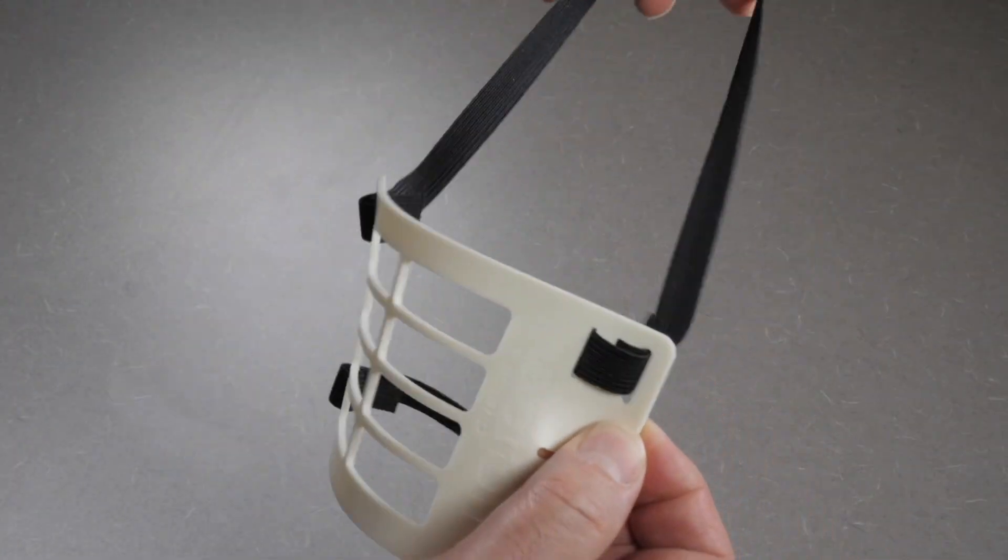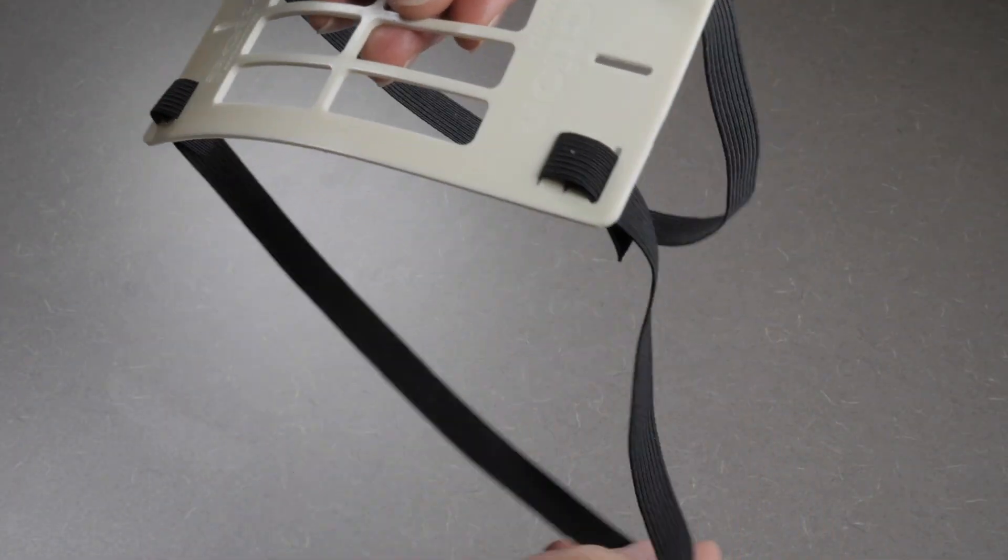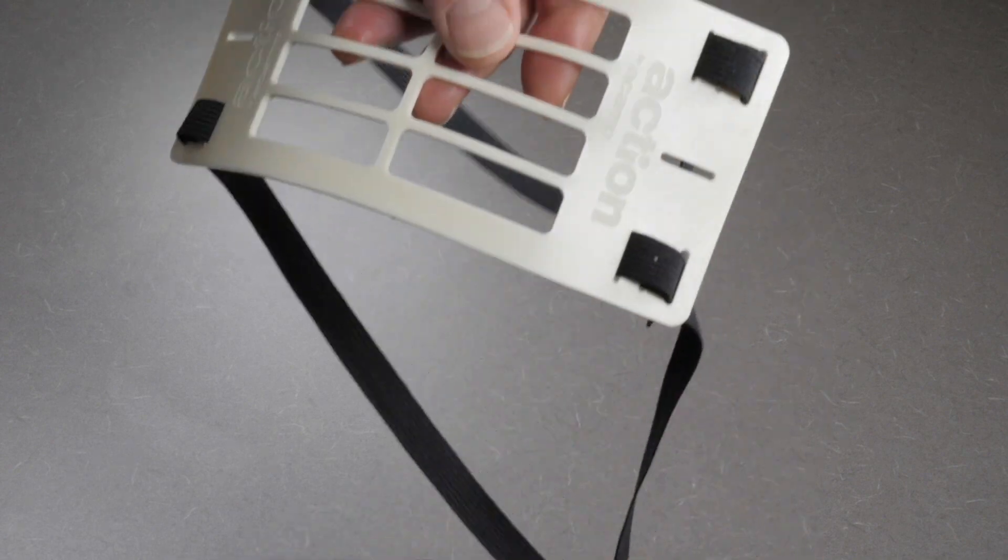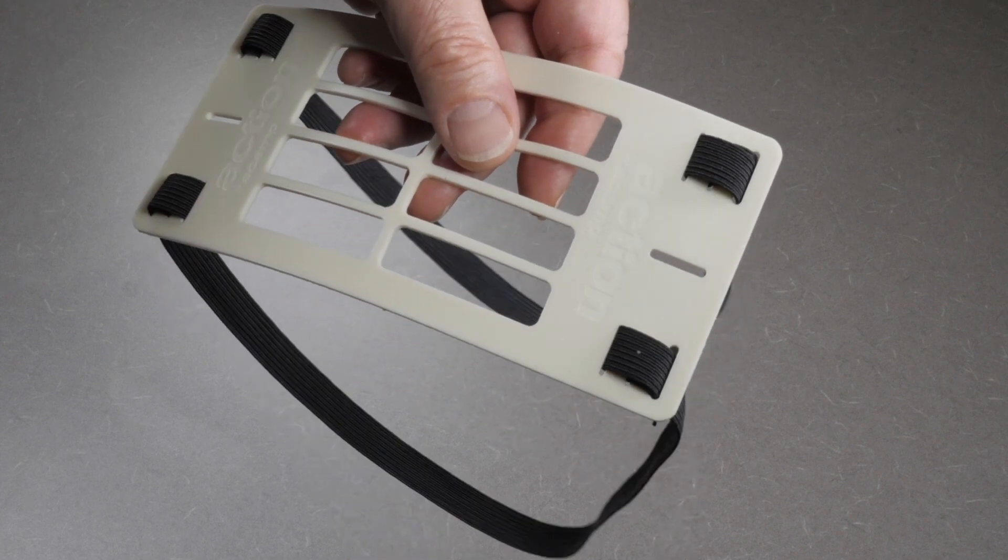The upper strap for the top of your head is cinched on the top two corners, while the lower strap for the back of your neck is cinched on the bottom two corners. Once the straps are in place, you are ready to proceed to the next step.